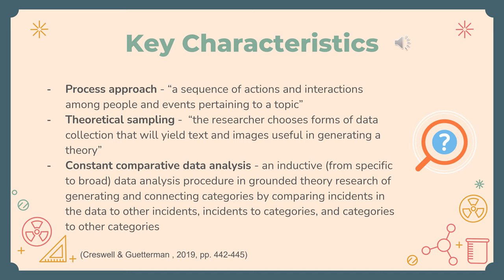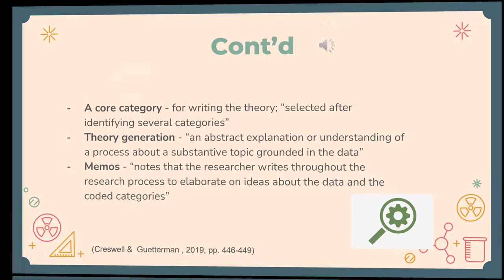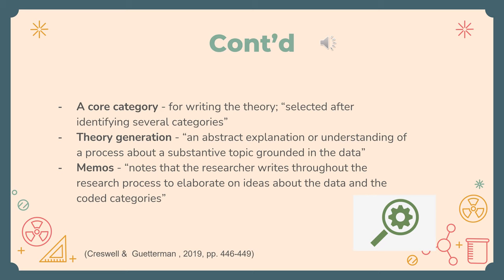For constant comparative data analysis, it is an inductive data analysis procedure in grounded theory research of generating and connecting categories by comparing incidents in the data to other incidents, incidents to categories, and categories to other categories — from specific to broad. For the core category, it is used for writing the theory and is selected after identifying several categories. It has to be related to all categories and appear frequently in data, and its name should be sufficiently abstract. For theory generation, when theorists identify a core category and its process category, they can generate a middle-range theory based on the data. Since it is too close to the data, it doesn't have broad acceptability.